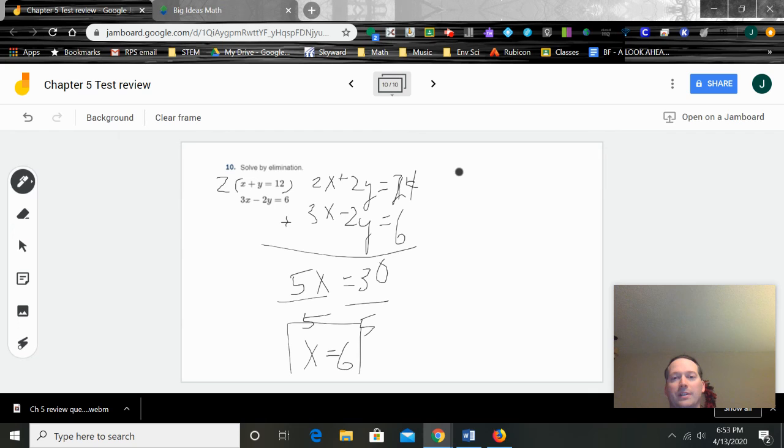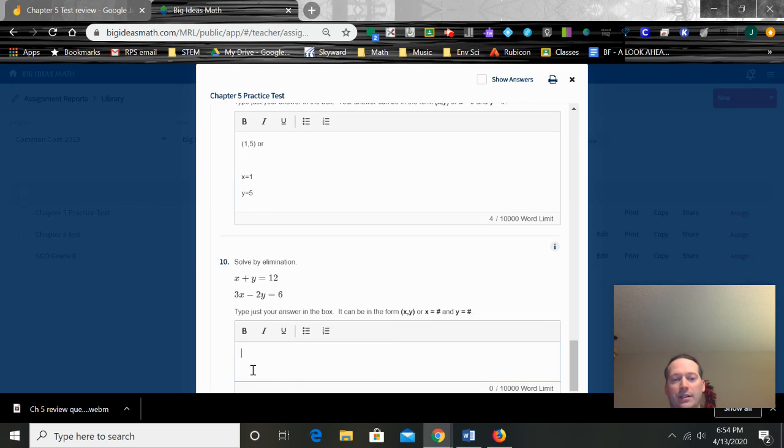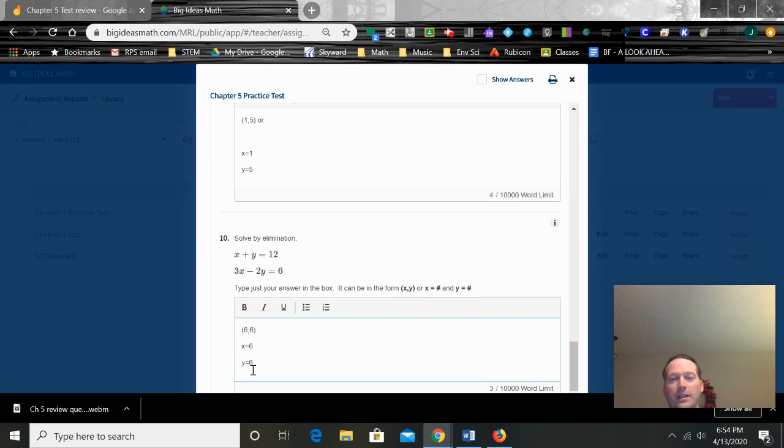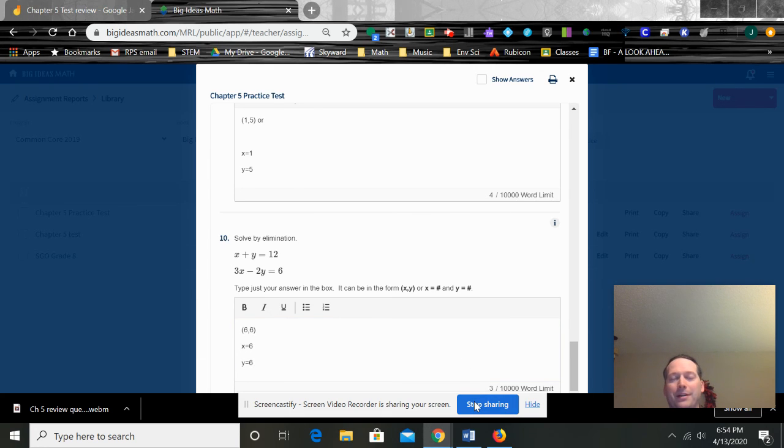Now we just substitute in to the top one just to make our life easy. So six plus y is 12. Subtract six from both sides. Y equals six. Yes, x and y can equal the same thing. So let's just double check. Six plus six is 12. Three times six is 18. Minus two times six is 12. 18 minus 12 is six. So again, to type it in, you can either type it in like this: six comma six, make sure it's in parentheses if you do it that way. Or x equals six, y equals six. Again, either way works. If you have any questions, please reach out to me. I'm more than willing to help you. Don't forget to make sure that you attach your work to the assignment in Google Classroom. So good luck. Reach out to me if you need any help.